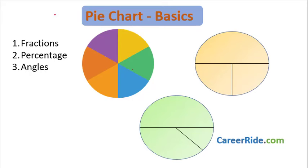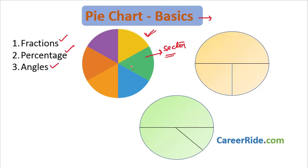Before we begin to solve questions from pie charts, let's set some basics right first, because these basics help you understand the questions properly and take the right approach to solve them. A pie chart presents data in the form of a circle with various sections. Each of these sections is called a sector and represents some data. This data could be in the form of fractions, percentages, or angles. Let me explain fractions with a practical real-life example.